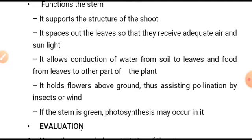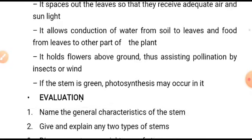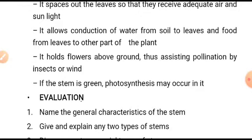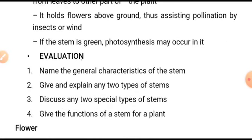The stem allows conduction of water from soil to leaves, and food from leaves to other parts of the plant. The conductive tissues — xylem, responsible for transporting water, and phloem, responsible for transporting food and nutrients — are found in the stem. The stem also holds flowers above ground, assisting pollination by insects or wind. If the stem is green, photosynthesis may also occur in it.